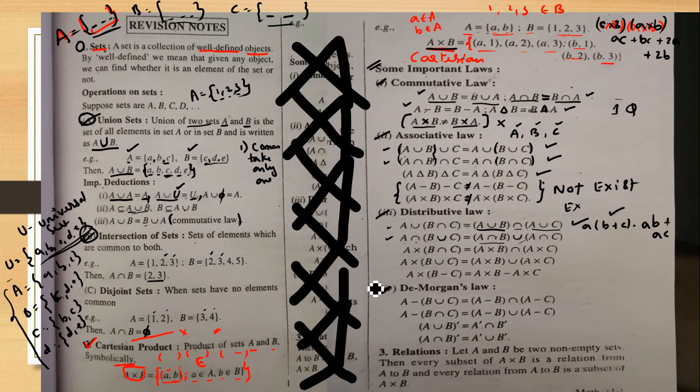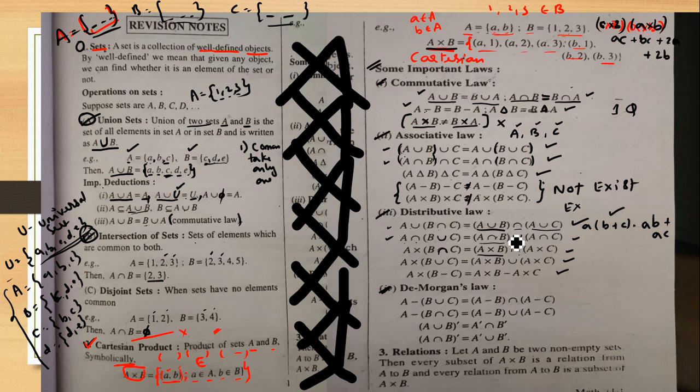The other distributive forms involve cross product: A cross (B intersection C) equals (A cross B) intersection (A cross C). And A cross (B union C) equals (A cross B) union (A cross C). Also A cross (B minus C) equals (A cross B) minus (A cross C). The distributive property exists for cross product.